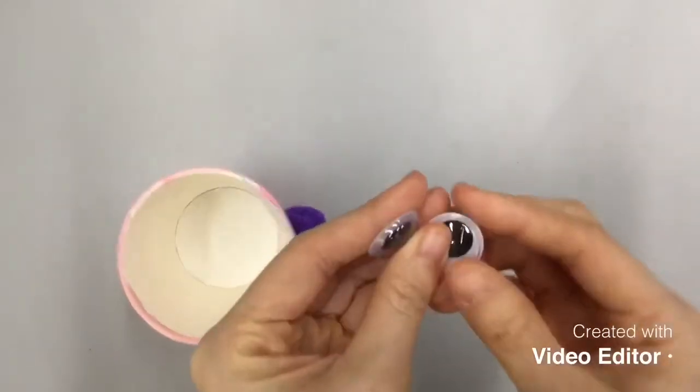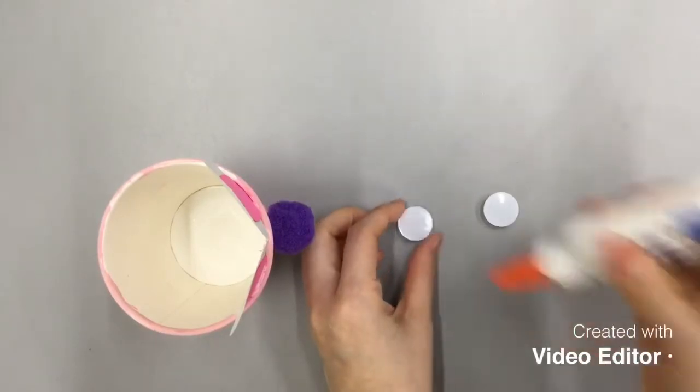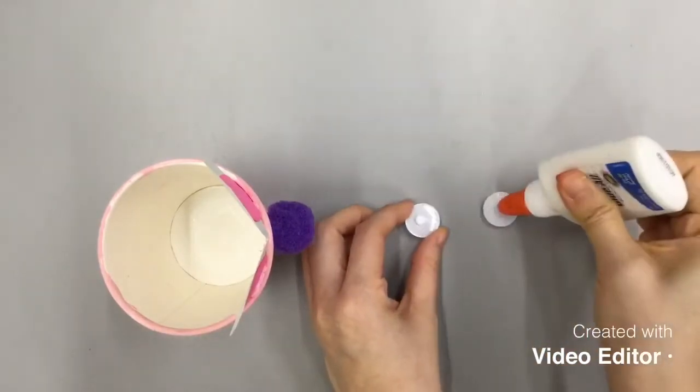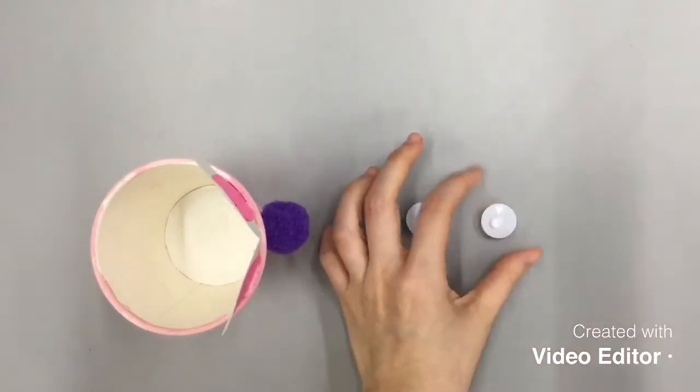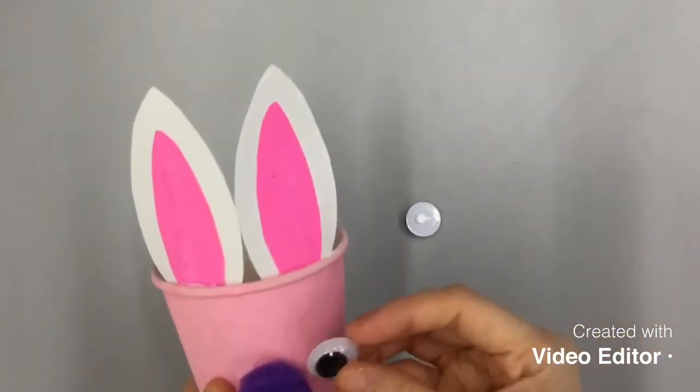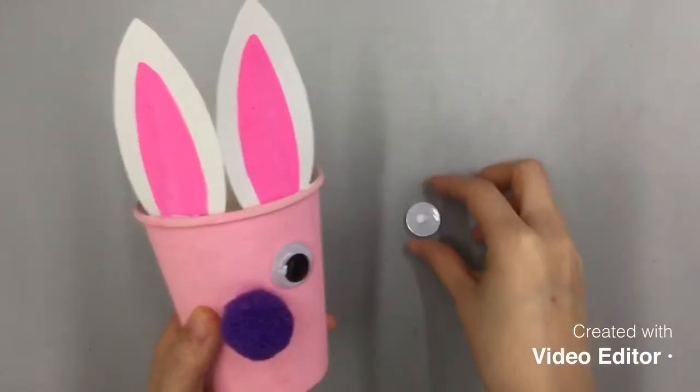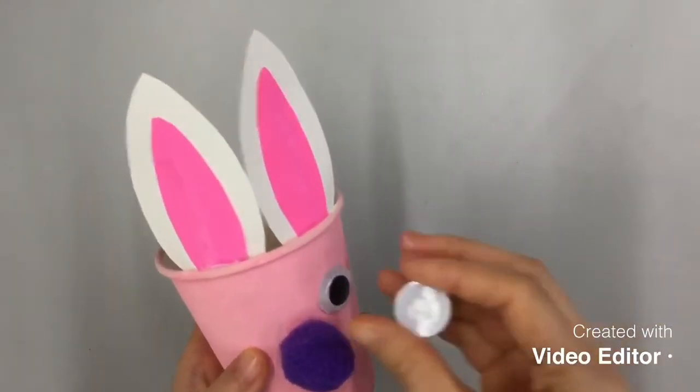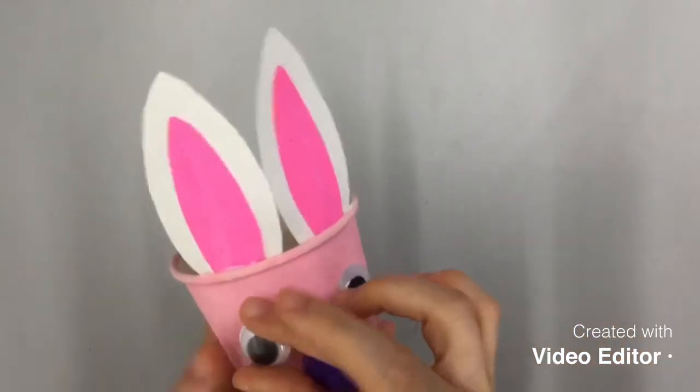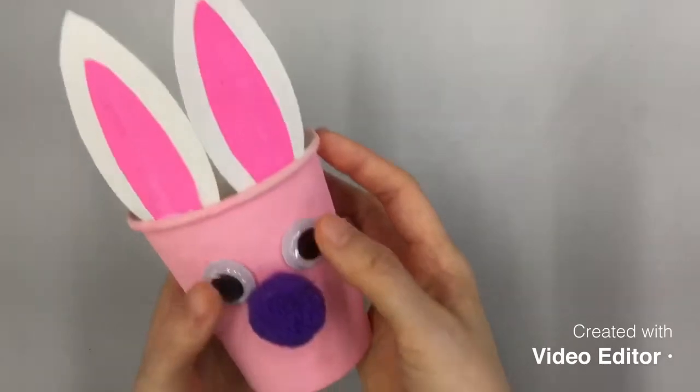Now take the pair of the wiggly eyes and apply a dot of glue on the back. And place it nicely between the nose and each ear. And here comes another one. See they really wiggle.